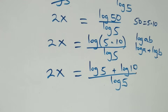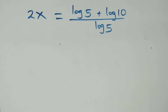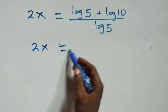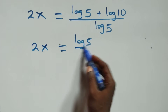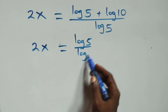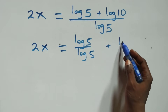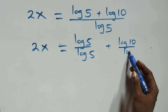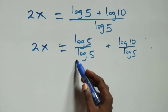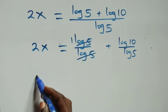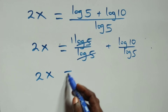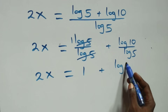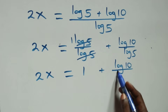Next step here: we separate this into two fractions. That is, we have 2x equals to log 5 over log 5, plus log 10 over log 5. Then, log 5 cancels each other and 1 is left. That is, 2x equals to 1 plus log 10 over log 5.